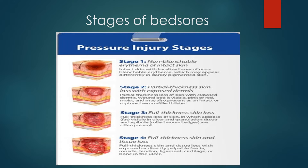Stage 4 is full thickness skin and tissue loss. In stage 4, full thickness skin and tissue loss would expose or directly palpate fascia, muscle, tendon, ligament, cartilage, or bone in the ulcer.